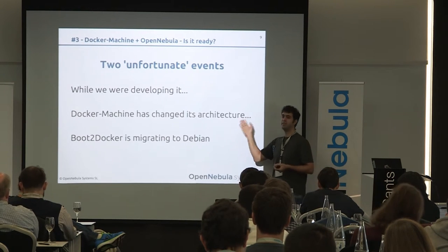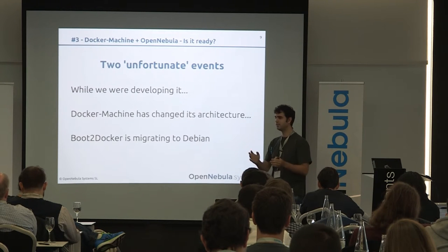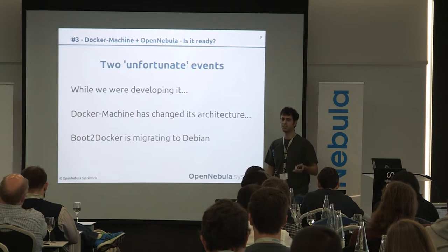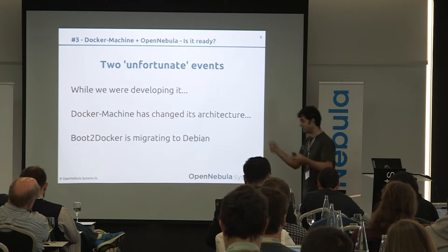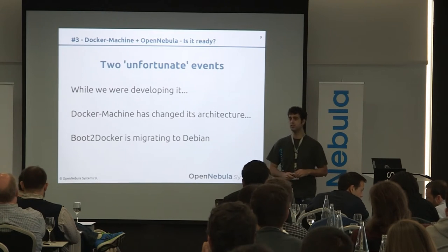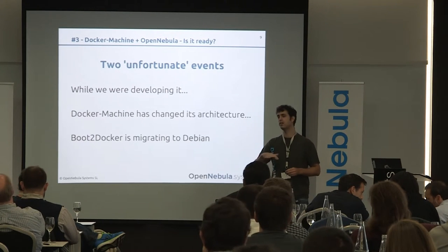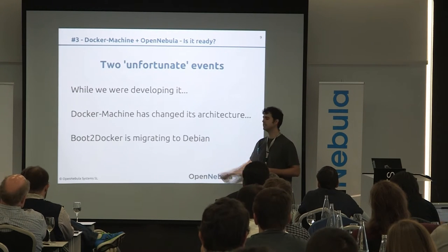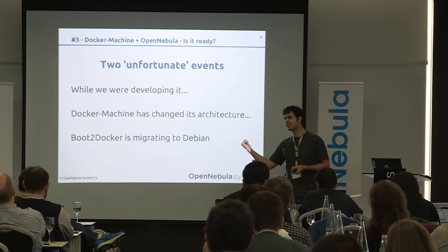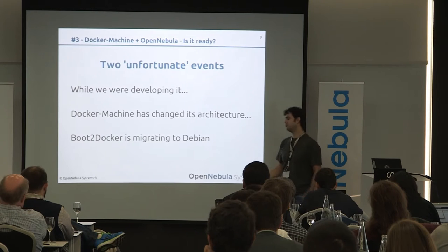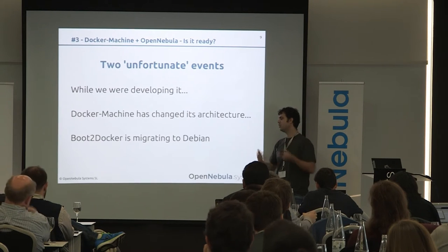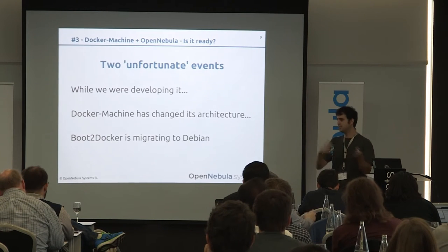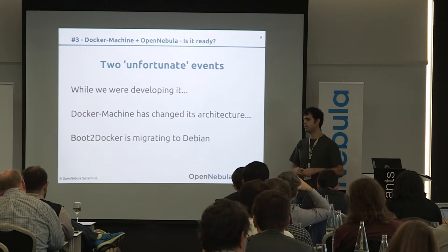Unfortunately, I really wanted to have this ready for you to try out, but Docker Machine is undergoing changes, so it simply couldn't be done. At the very same time, boot2docker decided it was going to end its cycle and switch from Tiny Core Linux to Debian. So they didn't accept our pull request either. We had to build and host it ourselves, and once they properly migrate to Debian, we will add support for OpenNebula in boot2docker.